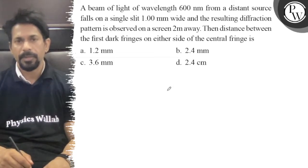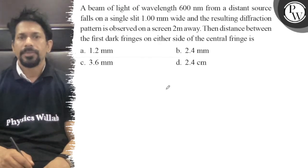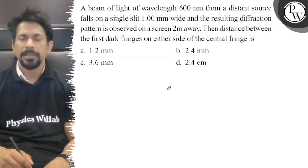A beam of light of wavelength 600 nm from a distant source falls on a single slit 1.0 mm wide and the resulting diffraction pattern is observed on a screen 2m away. Then distance between the first dark fringe on either side...